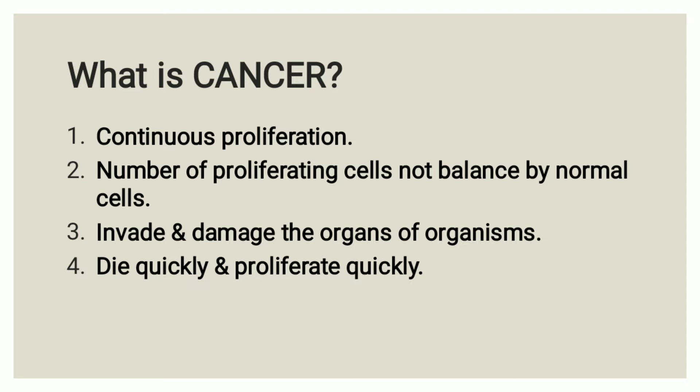Although cancer cells die more quickly than the normal cells they derive from, new cell formation occurs so quickly that the cancer cells accumulate. This imbalance arises from both the genetic abnormalities of cancer cells and the inability of organisms to recognize and destroy these cells.